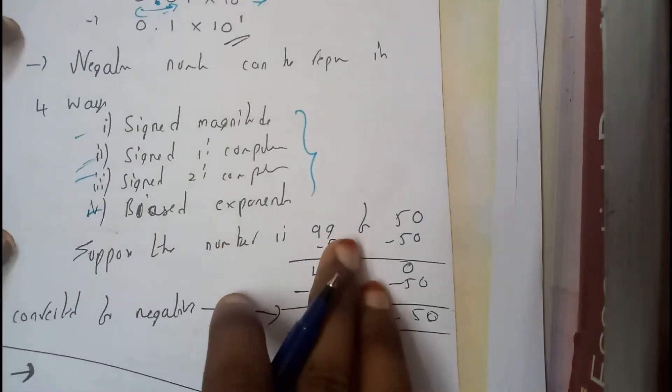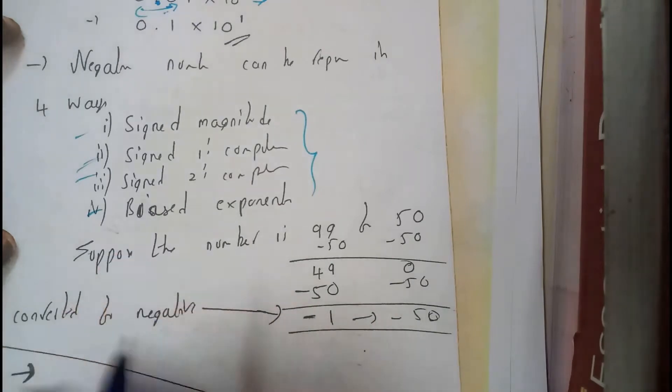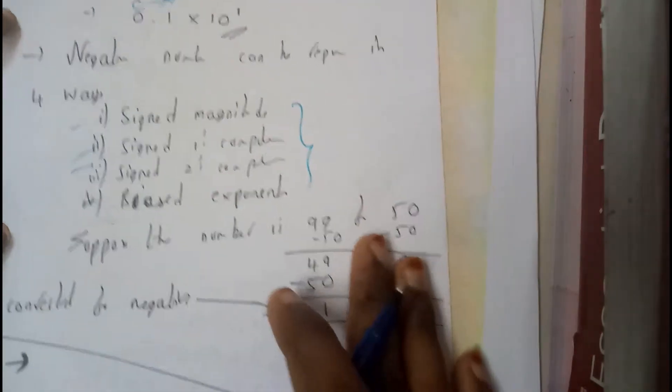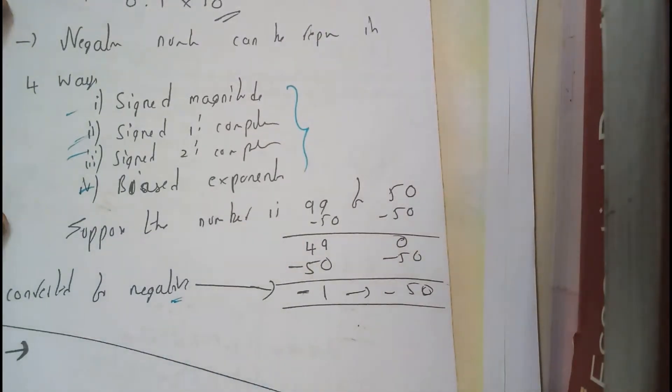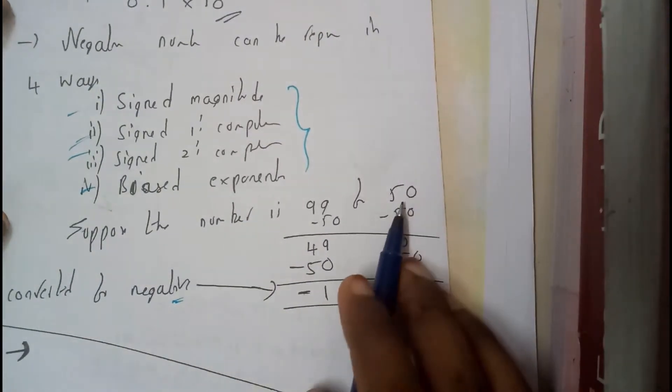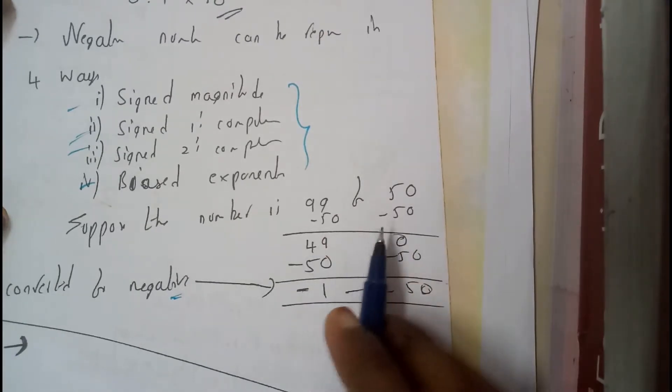Suppose we want to convert a number, suppose the number is 99 to 150, to convert it into some terms from negative, from minus 1 to something or 0 to particularly negative. Just subtract this part to make it 0, so minus 50 minus 50. We got here 0, here 49.